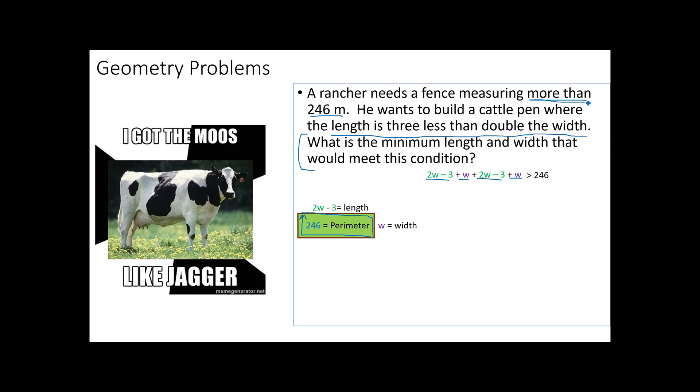Again, solving this should not be the difficult part, so we'll go through that quickly. If you need to pause the video to give yourself a chance to write, certainly now's the time to do that. And we come up with a width greater than 42 and a length that's greater than 81. Now, here's where things get a little more tricky. What values should we give in our final solution? Notice 42 plus 42 plus 81 plus 81 does indeed equal 246, but the rule says we have to have more than 246. How am I going to handle that in my final answer?